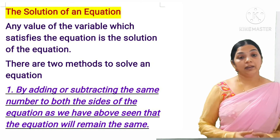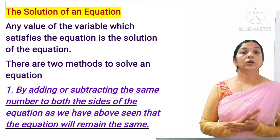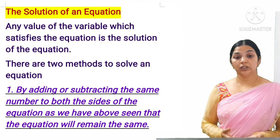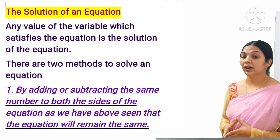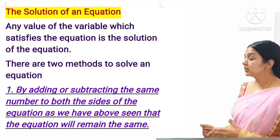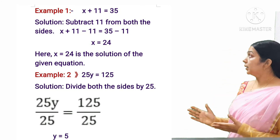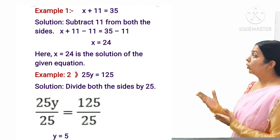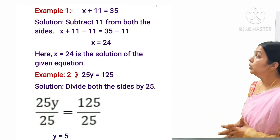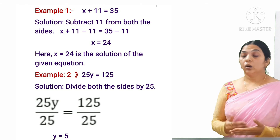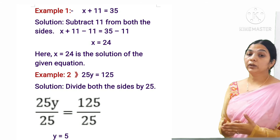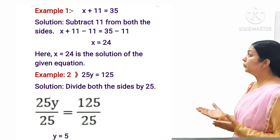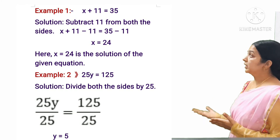Now, the solution of an equation. Any value of the variable which satisfies the given equation is known as the solution. There are two methods of solving. The first is by adding or subtracting the same number from both sides. For example, x + 11 = 35. Subtracting 11 from both sides: x + 11 − 11 = 35 − 11, so x = 24. Hence x = 24 is the solution.